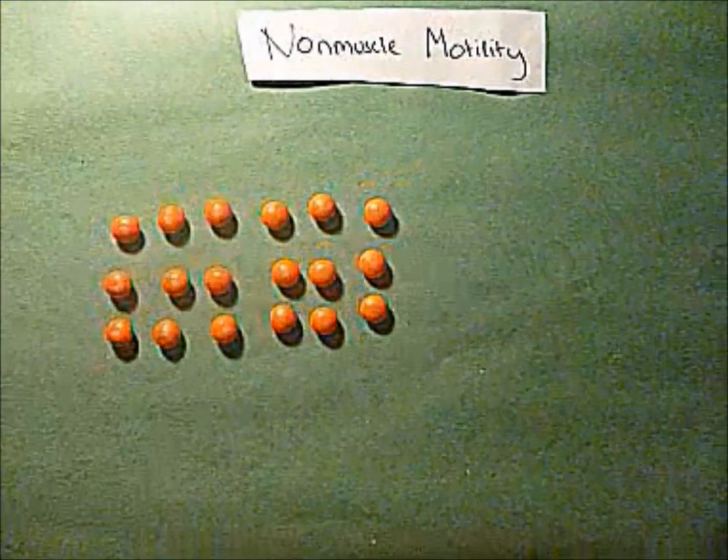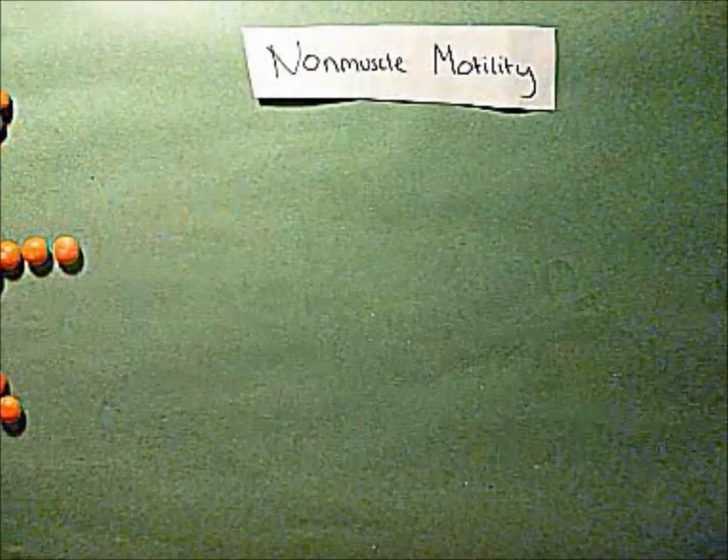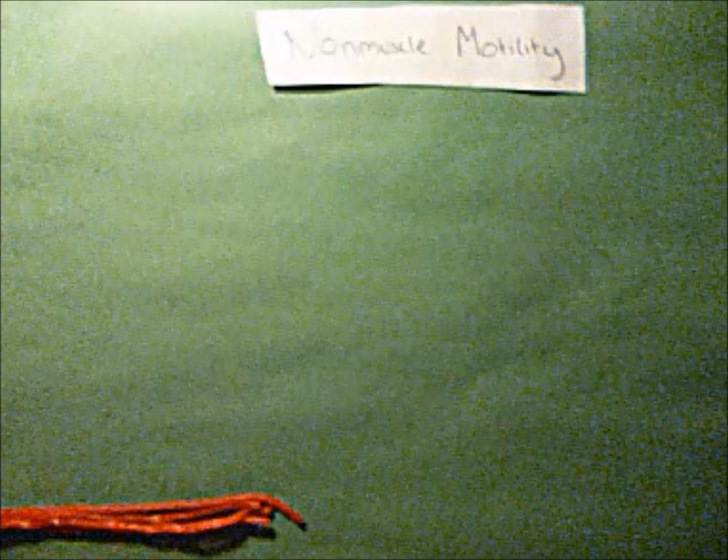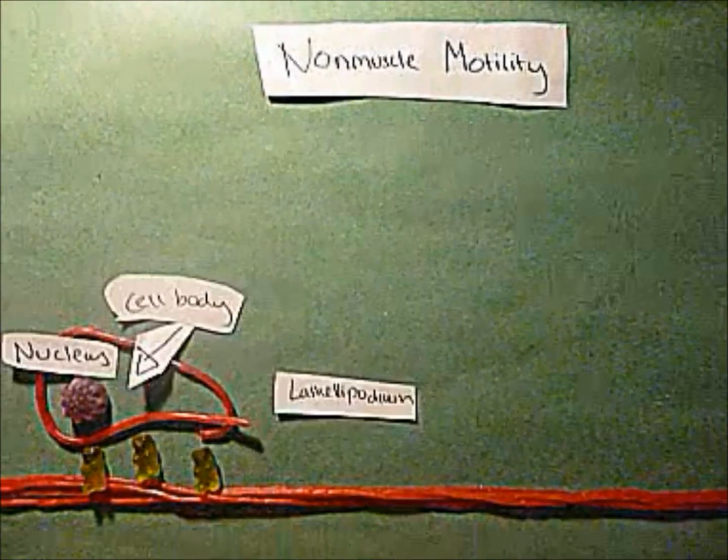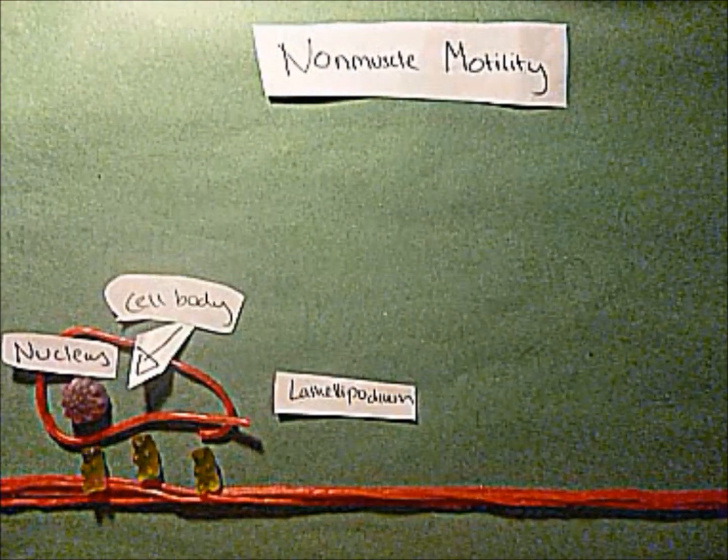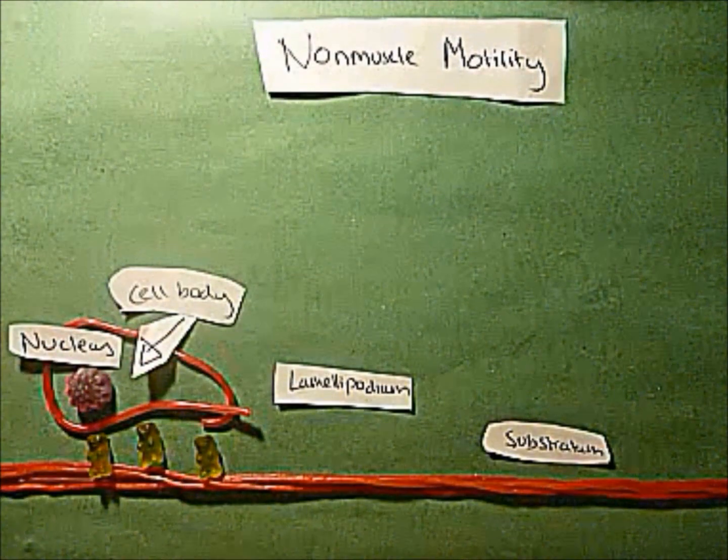These proteins affect the assembly of actin filaments, their physical properties, and their interactions with one another and with other cellular organelles. Cell crawling is an example of non-muscle motility.